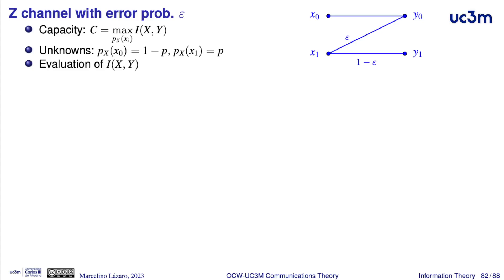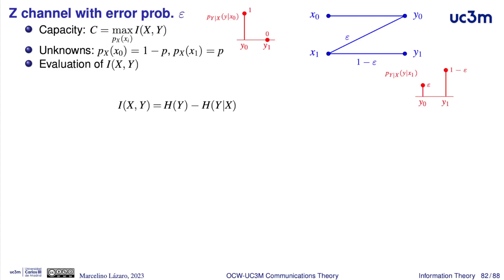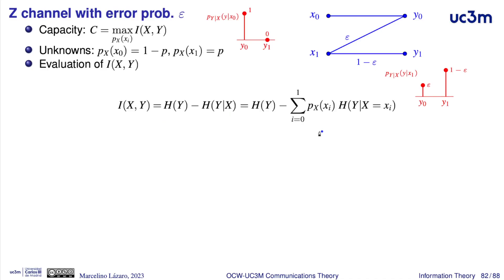It is necessary to evaluate the mutual information between the input and the output. We can use the relationship with the entropies: it is the difference between the entropy of the output and the conditional entropy of the output given the input. The conditional entropy of the output given the input can be obtained by averaging the entropy of y for every possible value of x.